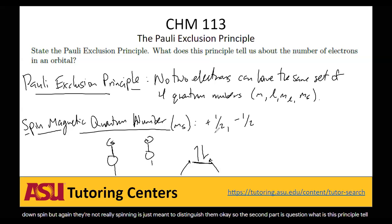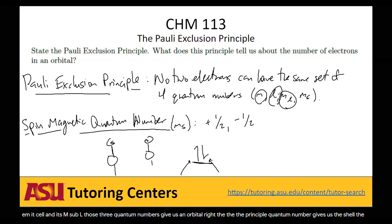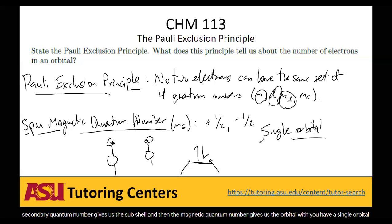The second part of this topic: what does the Pauli Exclusion Principle tell us about the number of electrons in an orbital? An orbital is defined by n, l, and M sub L — the principal quantum number gives us the shell, the secondary quantum number gives us the subshell, and the magnetic quantum number gives us the orbital within that subshell. So all electrons within a single orbital share the same n, l, and M sub L values.